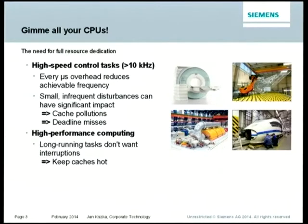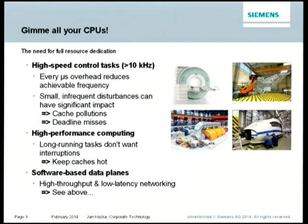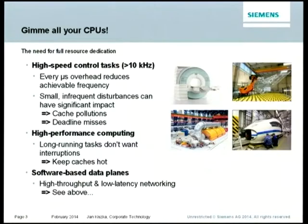But there's more beyond that. In high-performance computing, there's also interest in dominating single cores or single CPUs fully, simply to keep caches hot and finish calculations earlier. Another scenario we learned about when we went open with this project — not in our focus right now but interesting for other users — is software-based data planes. In software-defined networking, there's a data plane with big data run-through, and if done completely in software, you have the typical requirements for high throughput and low latency.